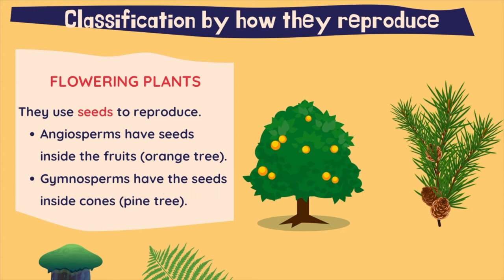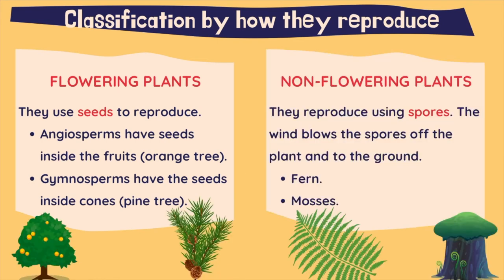Gymnosperms have the seeds inside cones, like the pine tree, which has the seeds inside the pines. On the other hand, non-flowering plants reproduce using spores. The wind blows the spores of the plant to the ground, and that's how a new plant will grow.